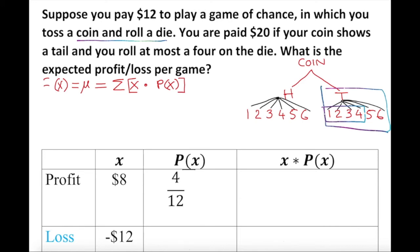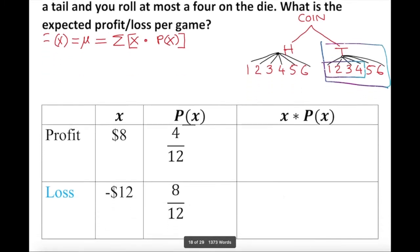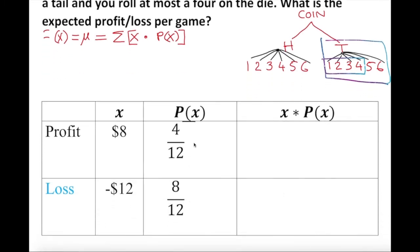So if 4 out of 12 is the probability of profit, we can easily find the failure probability: 12 minus 4 is 8 out of 12. We can simplify: 4/12 simplifies to 1/3, and 8/12 simplifies to 2/3.